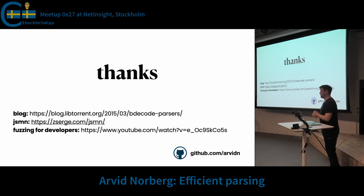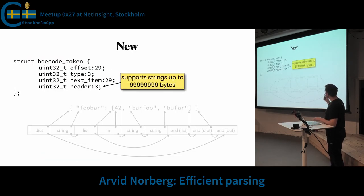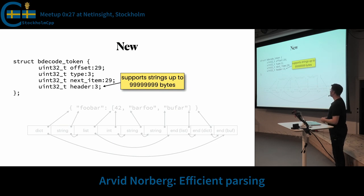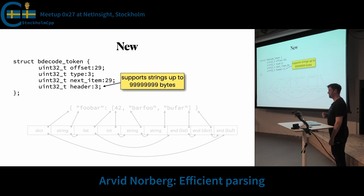Question: Exposing my ignorance — what is the colon you put there? Answer: It makes it a bit field, meaning it's that many bits — 29 bits and then three bits. The risk with it is that if you ever use this in a network packet or something, the order of the fields is a little bit arbitrary and typically depends on the endianness of the machine.